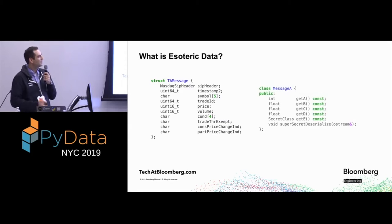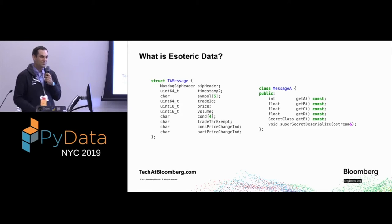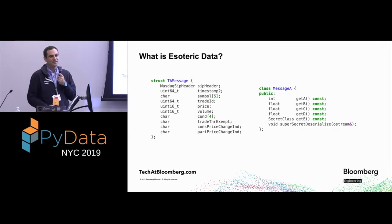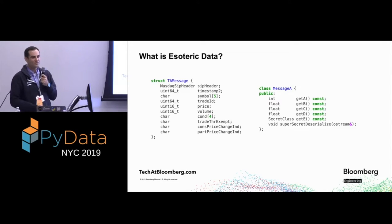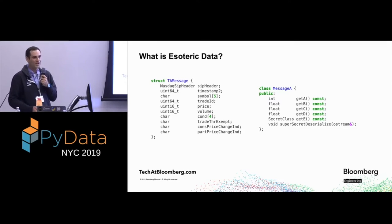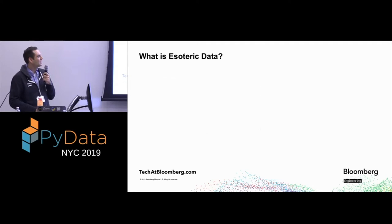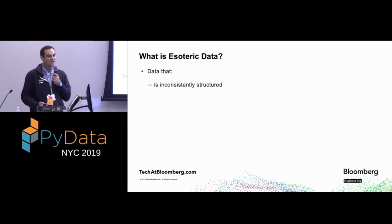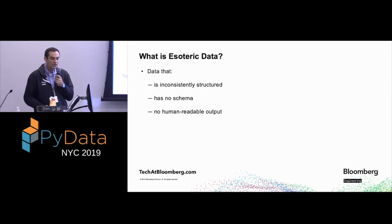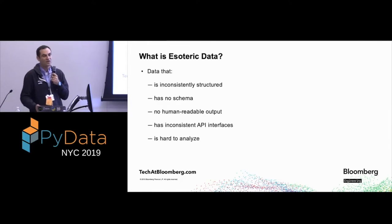Here is an example of a binary encoded message — an ARCA data feed trade. Typically you read these by creating a class where each field corresponds directly to an offset in the packet, reading raw bits from the buffer. And finally, there's the proprietary class where the only way to access data is through the public interface — the getters. Sometimes it's nested. A lot of legacy systems have old C++ or C code, and that's the only way to access it. To sum up, esoteric data is data that is inconsistently structured, has no schema, no human-readable output, has inconsistent API interfaces, and is hard to analyze.